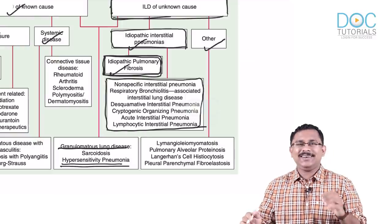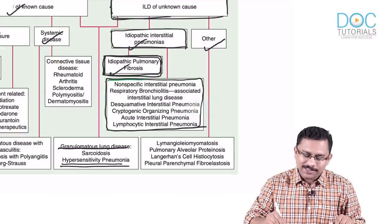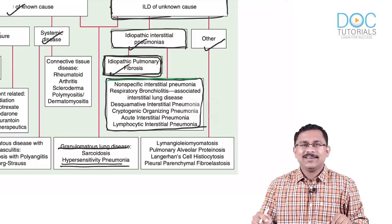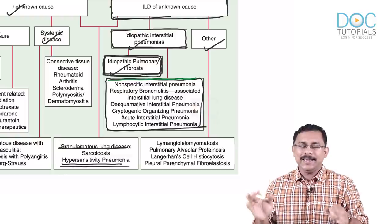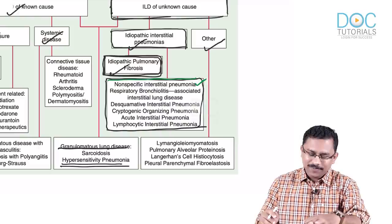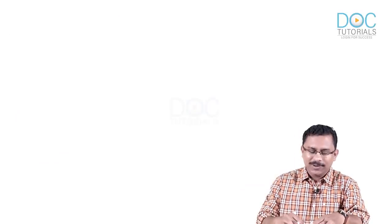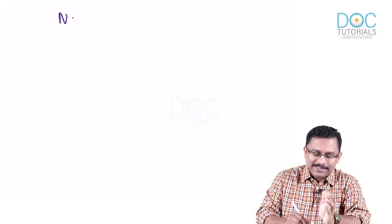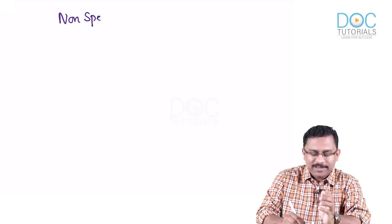Now let's look at other entities from the Harrison table. Next is NSIP — non-specific interstitial pneumonia — a very important one requiring a few key points. NSIP can be idiopathic, but there is also a secondary subtype associated with connective tissue diseases. The idiopathic variety typically presents in the fifth decade — mostly in the 40s.